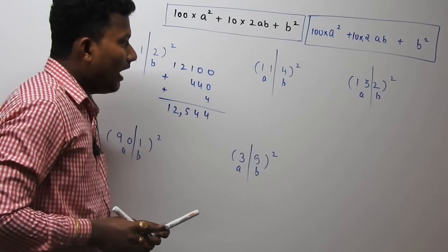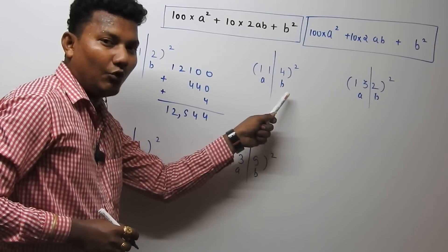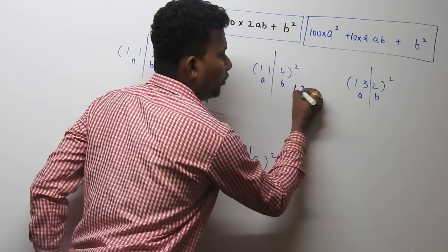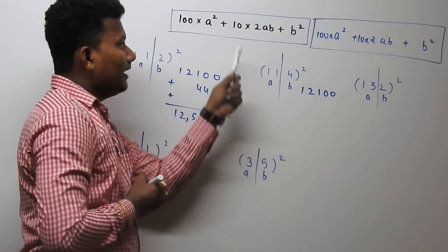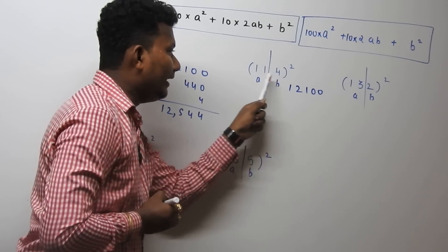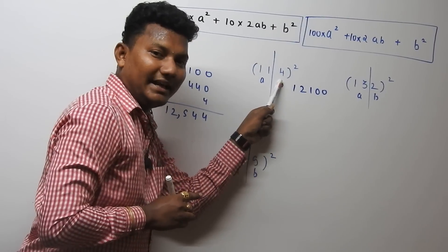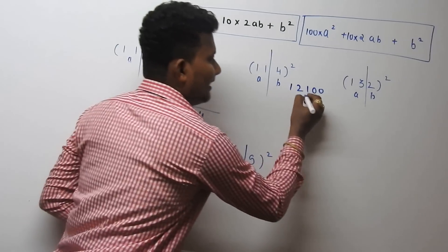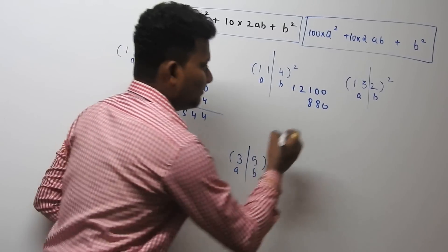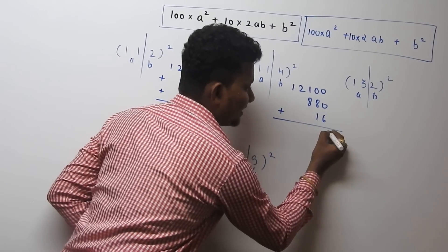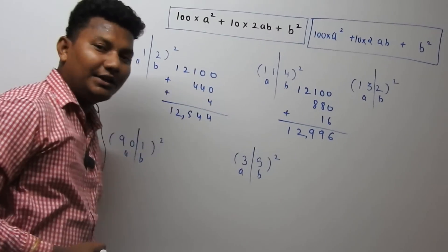Now focus on the next example: 140². Here the value of a is 14 and the value of b is 0. So a² = 14² = 196, and 196 × 100 = 19600. Next, 2ab = 2 × 14 × 0 = 0. And b² = 0² = 0. So the answer is 19600.